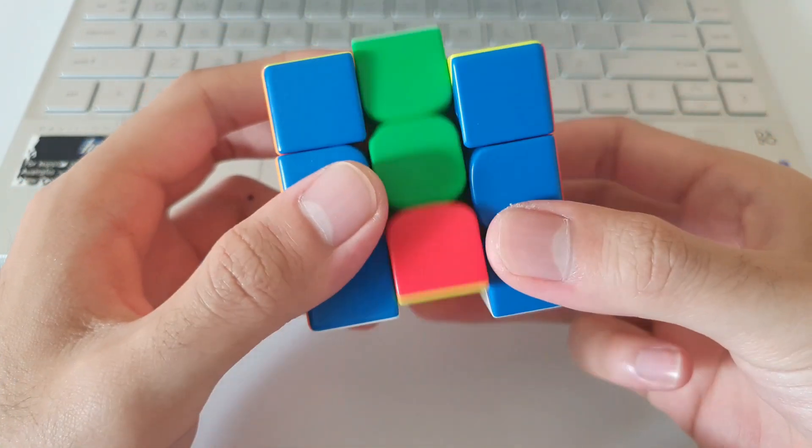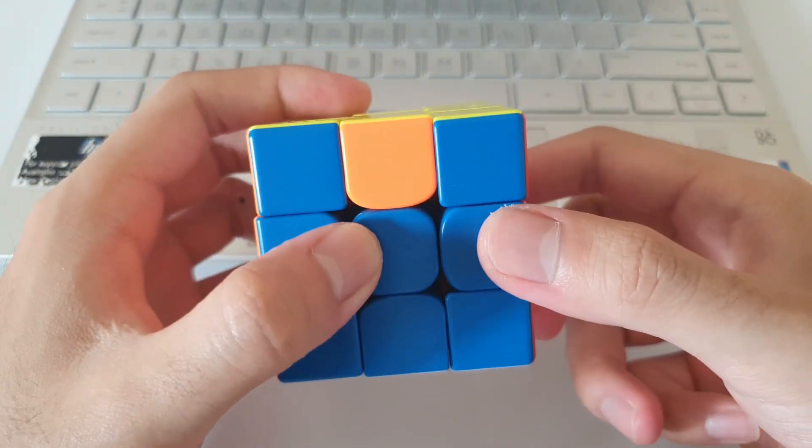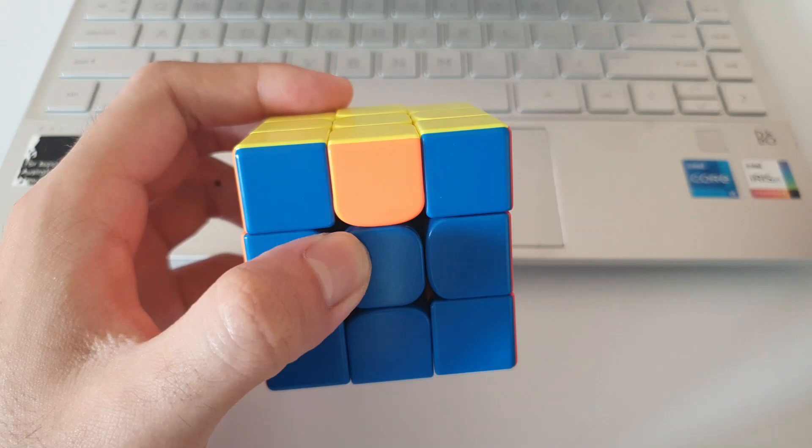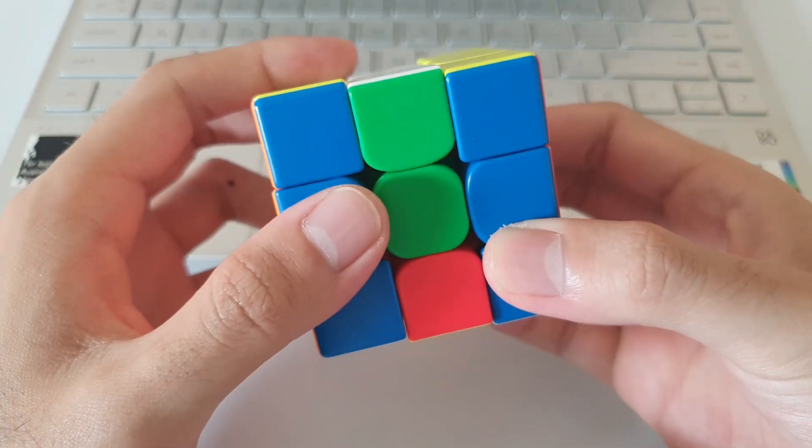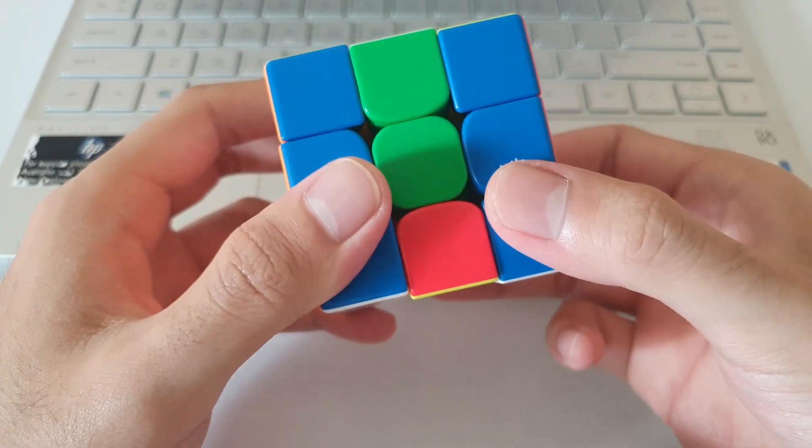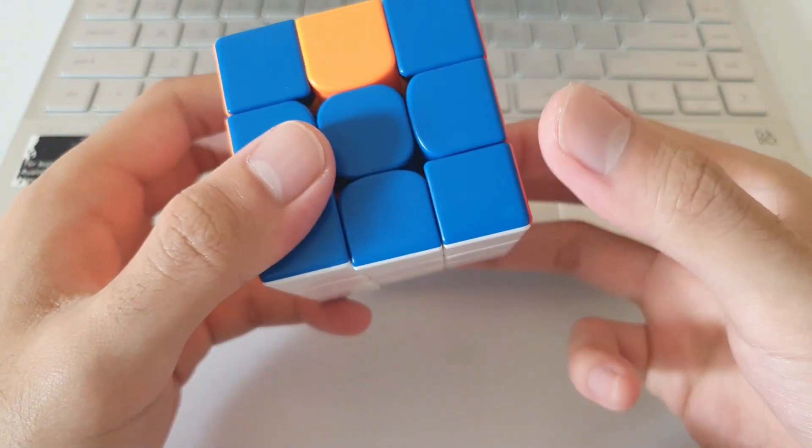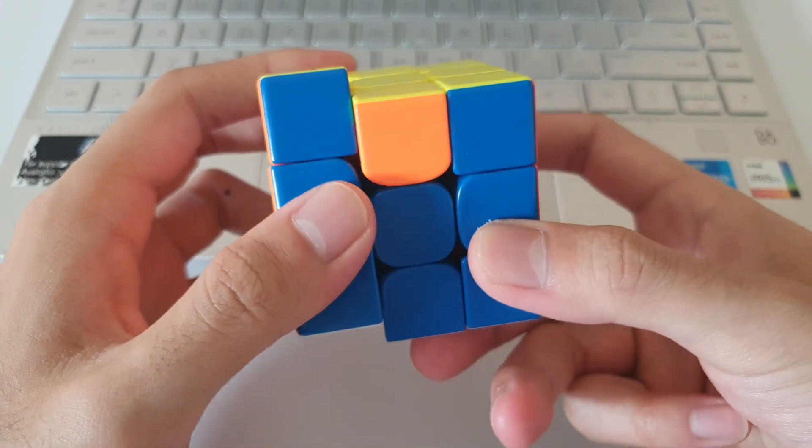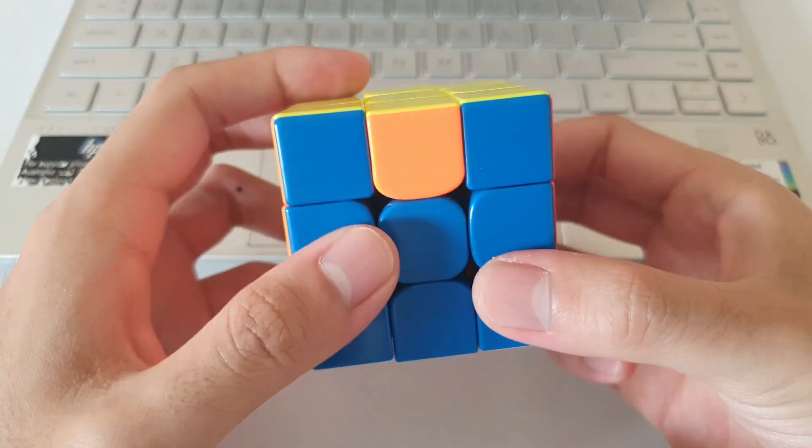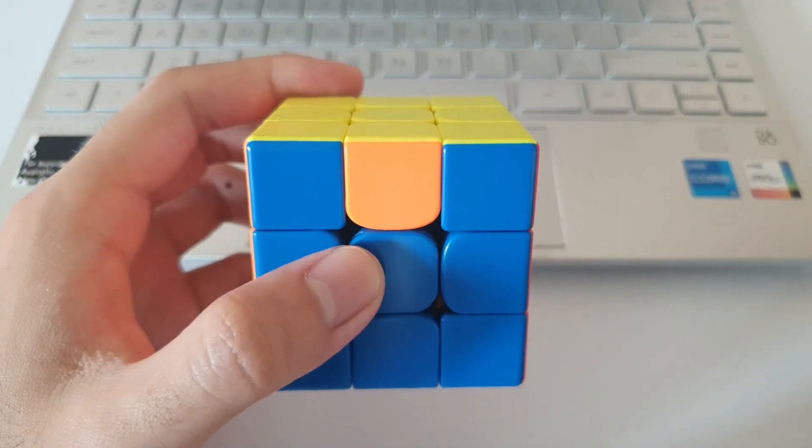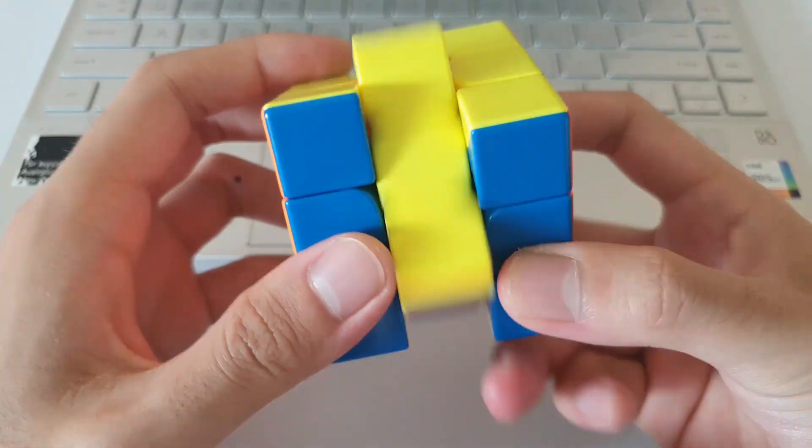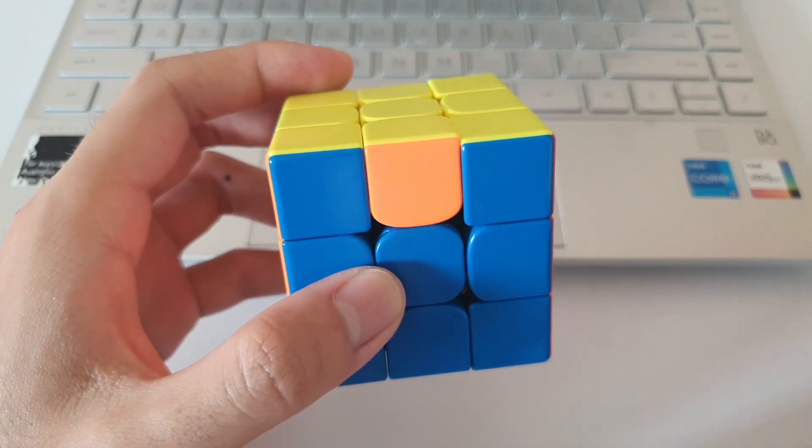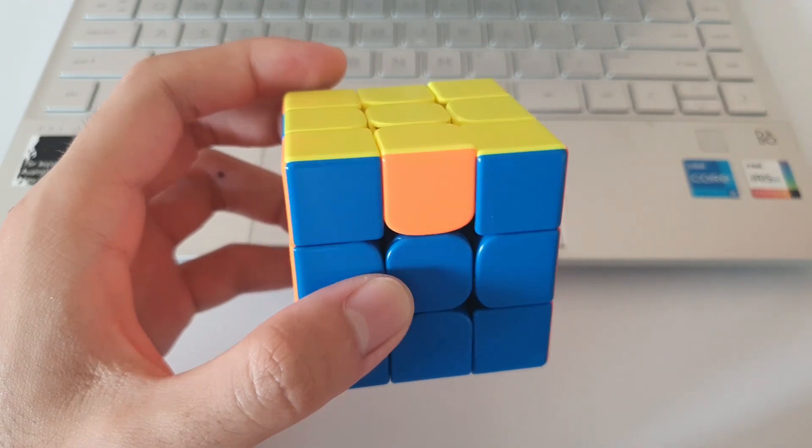I do go over more in depth with double flicks in my H perm and U perm tutorials. But just know that after a lot of practice, your accuracy with the double flicks will increase as well as consistency. And it will feel a lot more natural. Definitely practice the M2s. They're really important. And once you get familiar with them, they will be really fast and help you a lot with these algorithms.